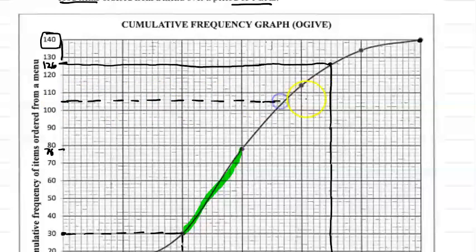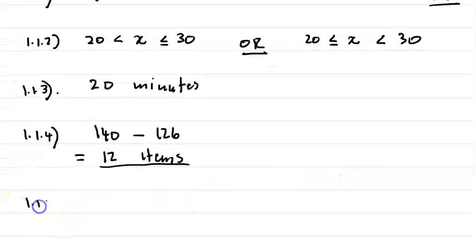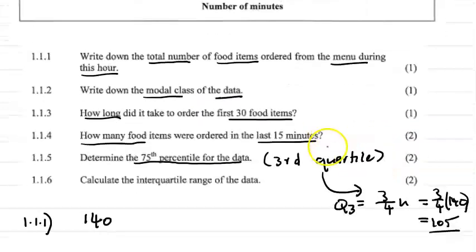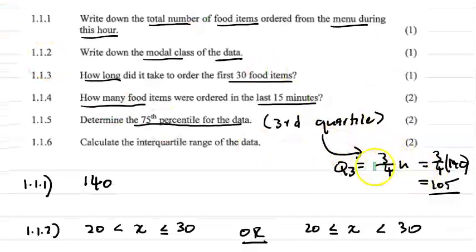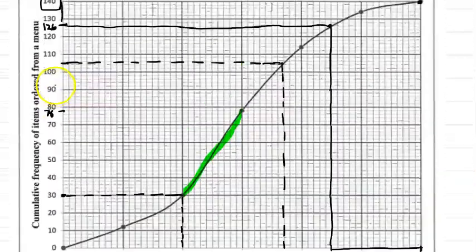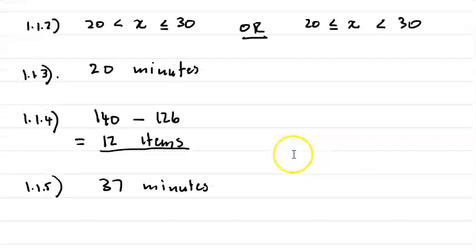Using your ruler, try to be as accurate as possible. Reading across from 105 on the y-axis to the curve and down to the x-axis gives approximately 37 minutes. So the answer for the third quartile is 37 minutes. Make sure you know how to work out the position: for grouped data, Q3 = (3/4) × n gives the 105th value, then read the corresponding x-value from the graph.